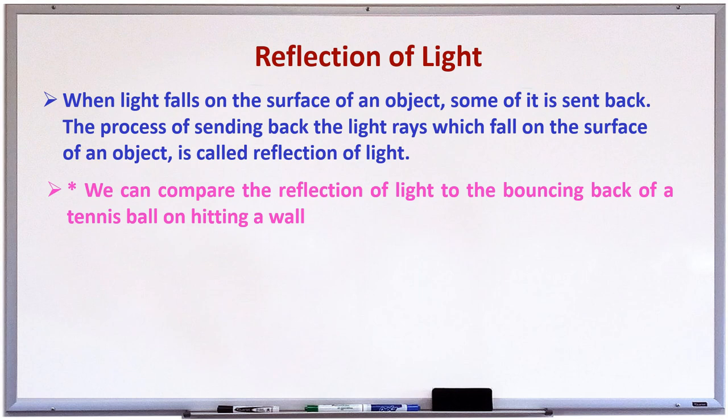Children, we can compare the reflection of light to the bouncing back of a tennis ball hitting on a wall. For example, if we throw a tennis ball at a wall, the ball bounces back. This means that the wall sends it back. Similarly, when the light falls on the surface of the object, the object sends the light back. And we say the object reflects the light. Most of the objects reflect light which falls on them. Some objects reflect more light and some objects reflect less light.